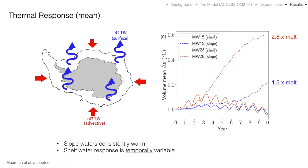What did we find? I'll start with the mean thermal response of the continental shelf — zooming out to look at the net heat budget of this continental shelf region and how it's affected by the perturbations. Under the control simulation, the heat budget is that heat is advected into the region across the continental shelf margin and lost to the atmosphere from surface cooling, illustrating what we understand about the near-Antarctic region as an area of heat loss to the atmosphere.